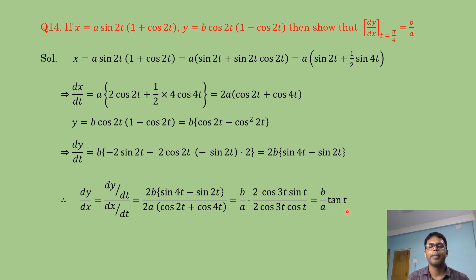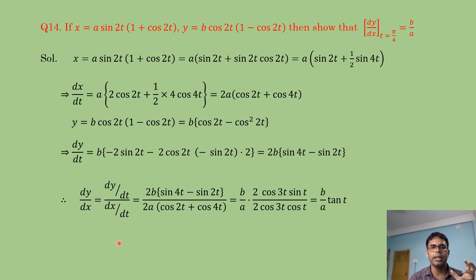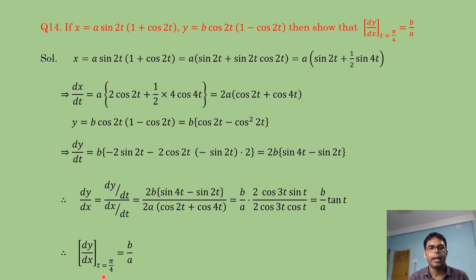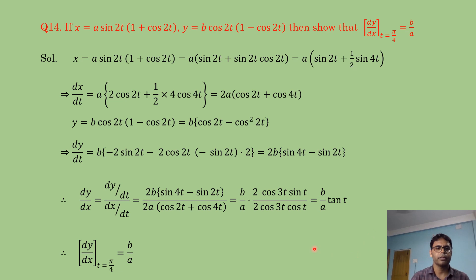After applying sum-to-product formulas, the cos3t terms cancel, leaving dy/dx = (b/a)·tan t. Substituting t = π/4: tan(π/4) = 1, so dy/dx at t = π/4 = b/a. That is the required result.